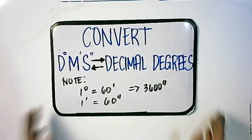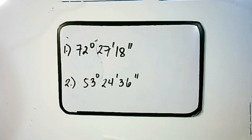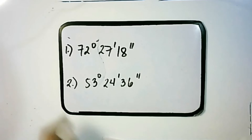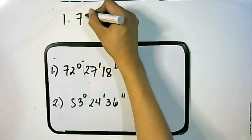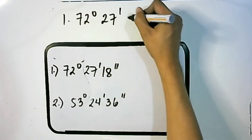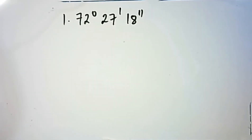So let's have an example. All our examples are in the form of degrees, minutes, and seconds, and we need to convert this DMS form into decimal degrees. Let's start with number one: 72 degrees, 27 minutes, and 18 seconds.